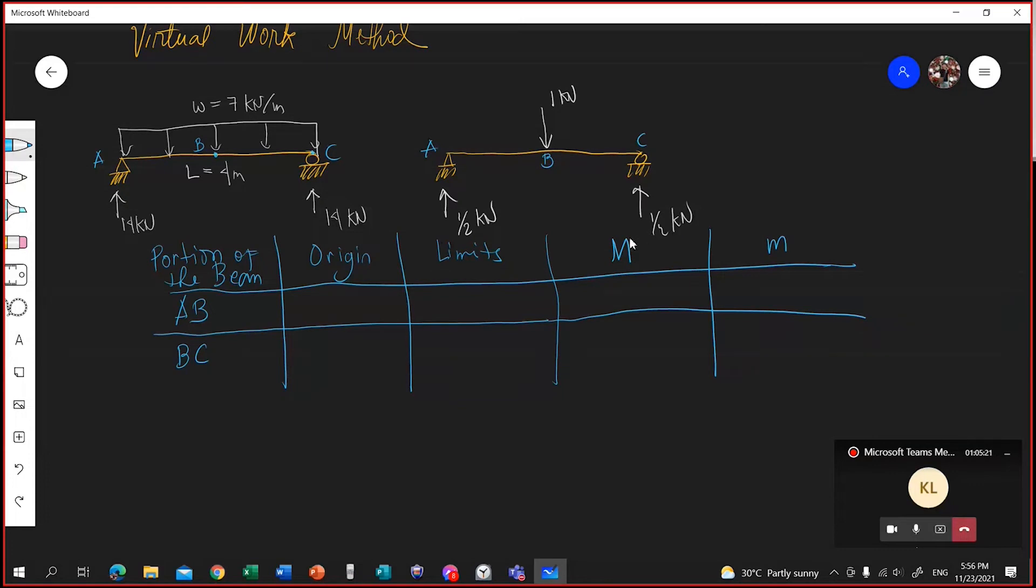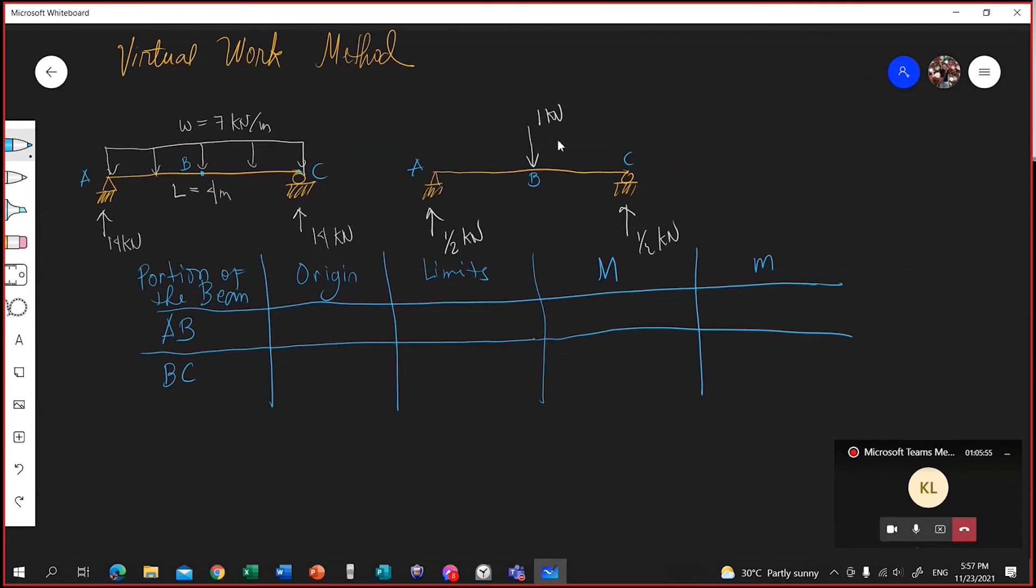This capital letter M here is the moment equation on the portion of the beam. Capital letter M stands for the moment equation due to the applied load, to the original applied load. And small letter m, this is the moment equation on the portion of the beam due to the virtual, I mean unit load. Due to the unit load of 1 kN.